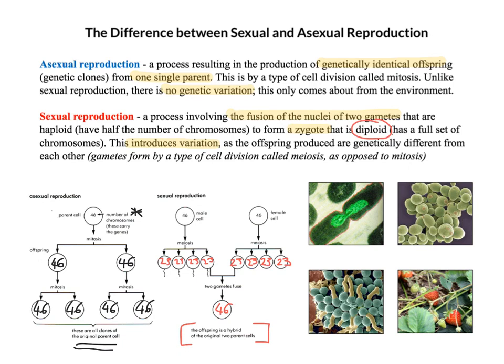In asexual reproduction, at each level of the diagram we have 46 chromosomes, because we're just producing clones - unlike sexual reproduction which produces cells with half the number of chromosomes. An interesting point to add: sexual reproduction doesn't always involve two parents. Self-fertilization, which is really common in plants, is still classed as sexual reproduction. So technically, sexual reproduction doesn't always involve two parents.